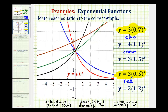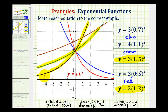That leaves two equations to match: one where b equals 1.5 and one where b equals 1.2. Both have b greater than one, so both are exponential growth, and since a equals three, both have a y-intercept of positive three. Focusing on the green and black graphs — the black graph is increasing faster, meaning its b value is larger. Since 1.5 is greater than 1.2, the equation with b equal to 1.5 represents the black graph, and the equation with b equal to 1.2 represents the green graph.